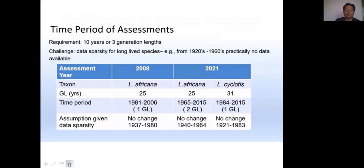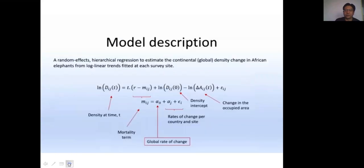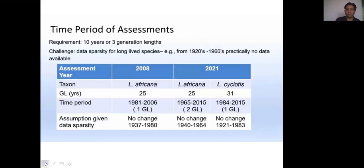For the time period of assessment, the IUCN red list requirements specify 10 years or three generation lengths. There is a challenge for long-lived species due to data unavailability. In the 2008 assessment, generation length was set at 25 years, while in the recent assessment, 25 years remains for savannah elephants but 31 years is applied for forest elephants.